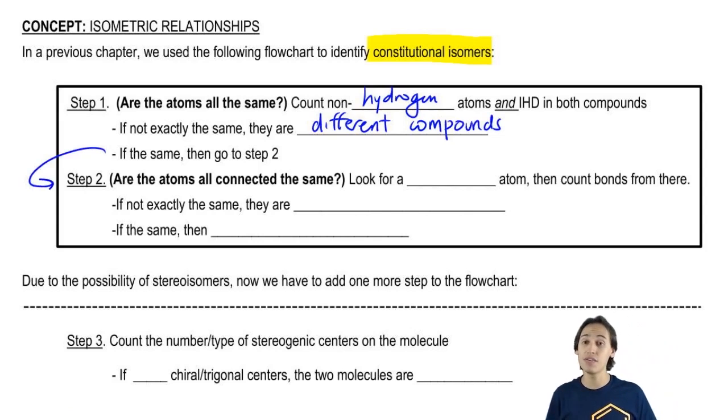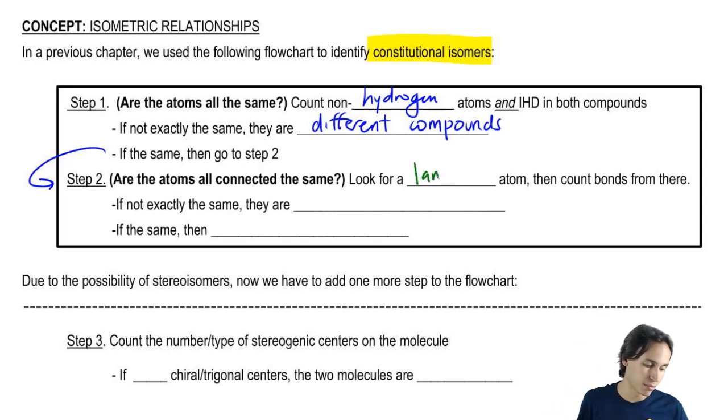And then we would talk about connectivity, and we said are they all connected the same. We talked about looking for a landmark atom. This is all review based on what we learned from constitutional isomers. And then we said if they are not exactly connected the same, then they're constitutional isomers.